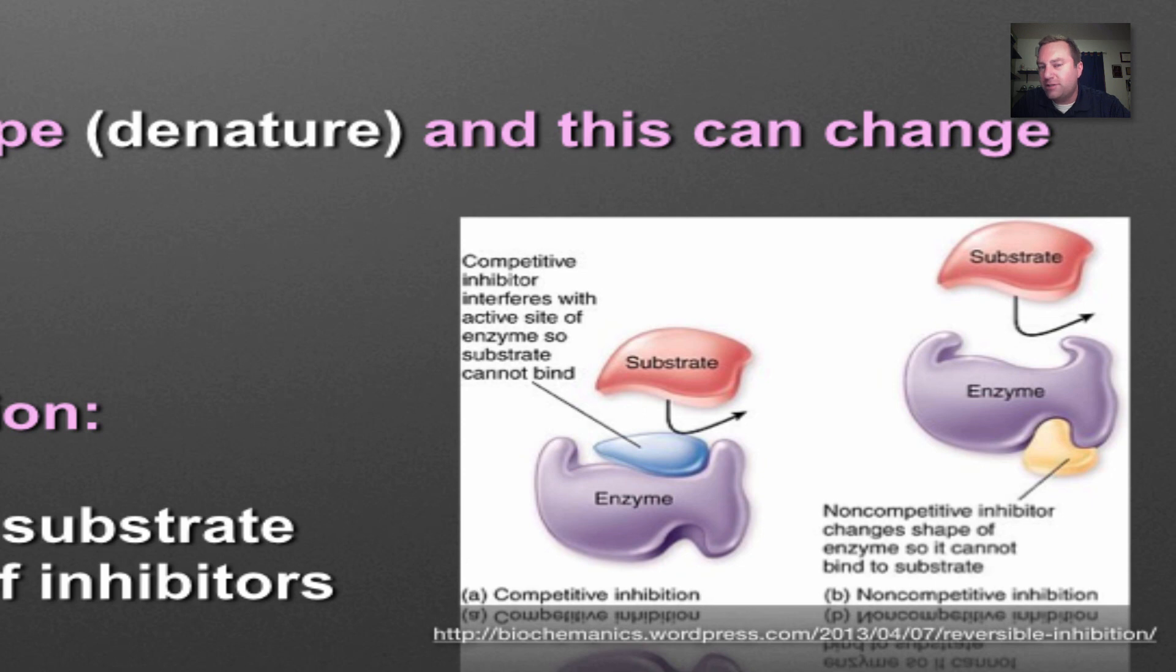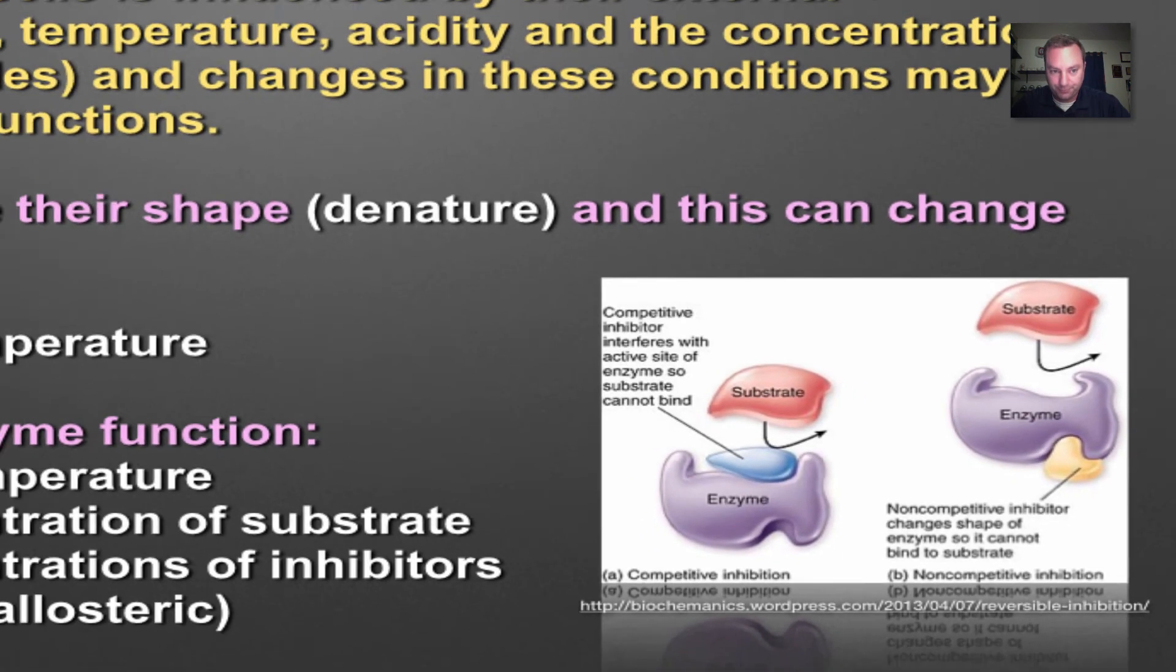Allosteric inhibition works kind of the same way, but you're not using the active site. You're using another site conveniently called an allosteric site. If you stick the inhibitor inside the allosteric site that changes the shape of the active site, then the substrate will not fit. You pull out the allosteric inhibitor, the active site goes back to its regular shape, voila, enzyme turned on, it starts to work.